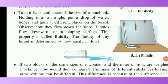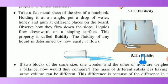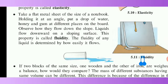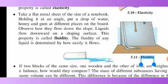When you take a metal sheet and drop water, honey, and glue on it, you will observe that water flows easily, honey flows a little slowly, and glue does not flow at all. From this, we can understand fluidity. The liquid substance that flows easily has high fluidity. Fluidity is a property determined by how easily a liquid flows.